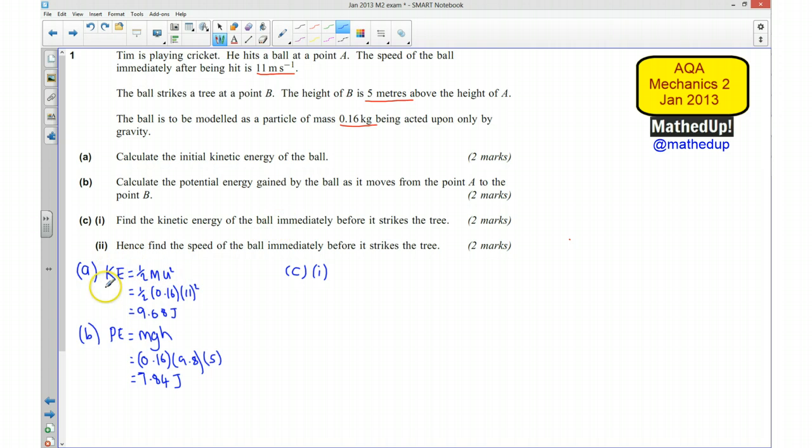Well, we know initially our kinetic energy was 9.68 joules. And when we calculated the potential energy gained by the ball as it moves from point A to point B, so when it strikes the tree, the potential energy it has gained is 7.84 joules. Now, this is also going to represent the kinetic energy lost.